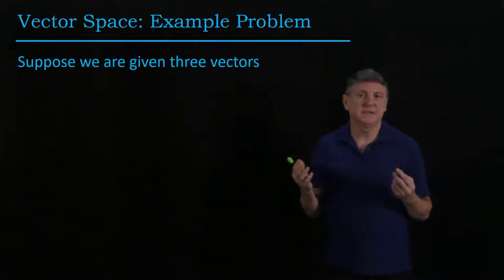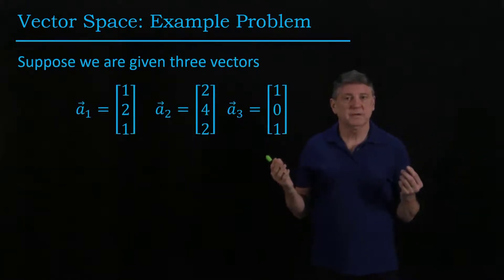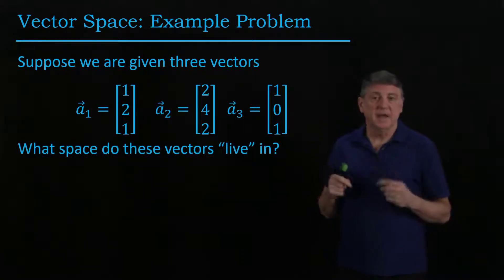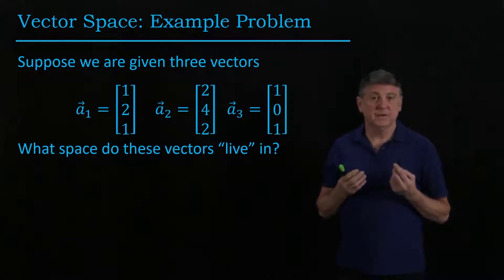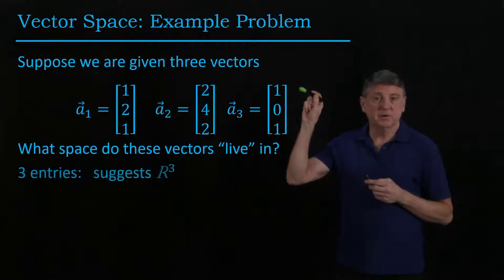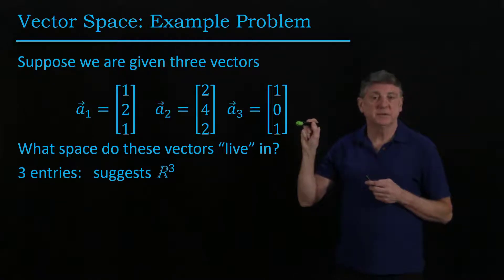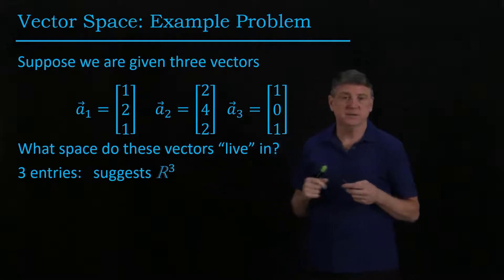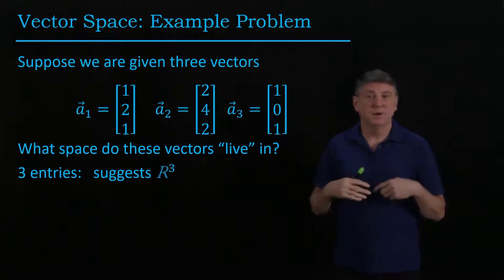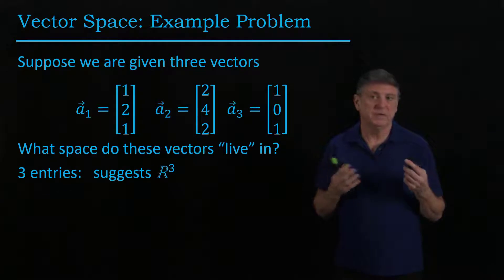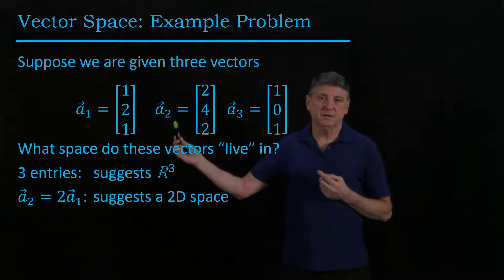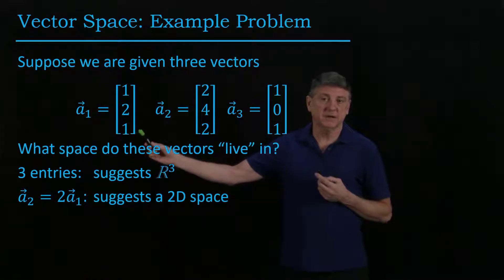So let's begin with an example problem. Suppose that we're given these three vectors, and the question is what space do these vectors live in? And there are two natural answers for the number three. The first is that there are three entries to each one of these vectors, and the second is that there are three of these vectors.